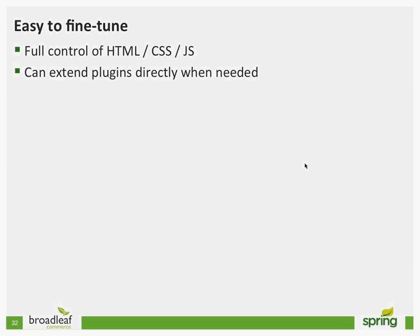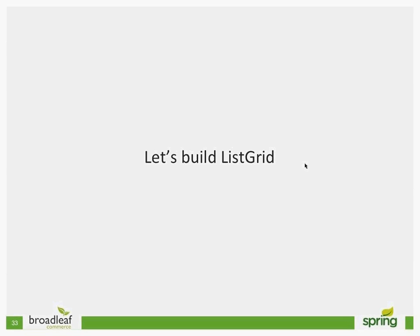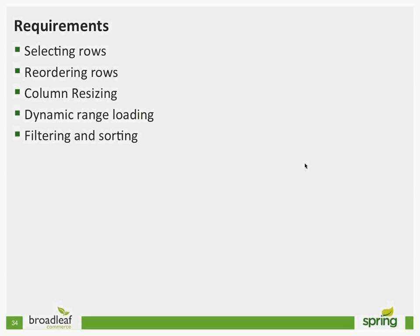Let's talk about actually building one of these list grids. There are a lot of requirements that the GWT list grid provided that we didn't want to lose: being able to select rows dynamically, where clicking a row triggers different actions depending on the list grid type; reordering rows, important for business users wanting products in a specific order; column resizing; dynamic range loading; and filtering and sorting.